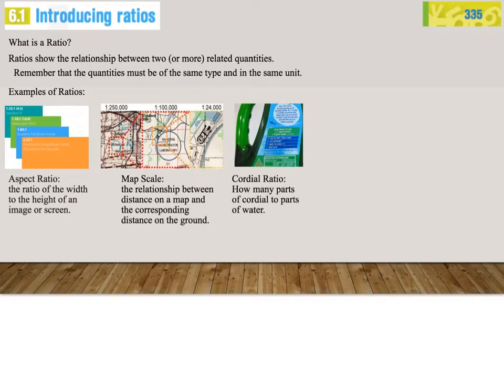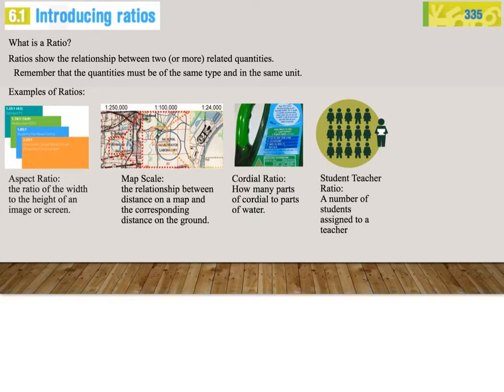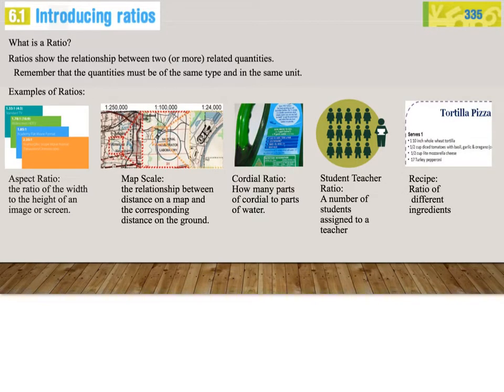Cordial Ratios is how many parts of cordial we use with how many parts of water. Student-Teacher Ratios is the number of students assigned to a teacher. Any recipe is just another ratio. It gives you the ratio of the different ingredients you need to make the certain number of things that you are hoping to make or bake at the end.